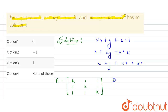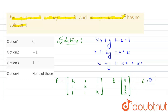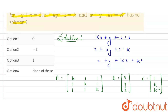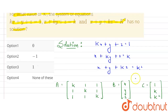Matrix B contains the variables x, y, z. Matrix C contains the right-hand side values: 1, k, and k². These are the values of A, B, and C. It is given that the equation will have no solution.